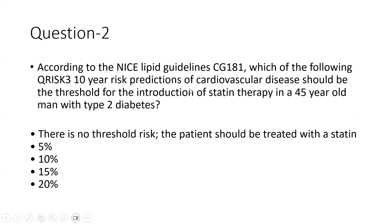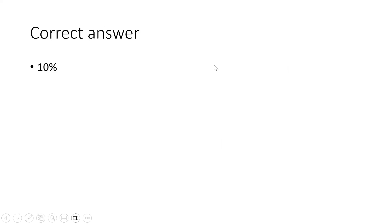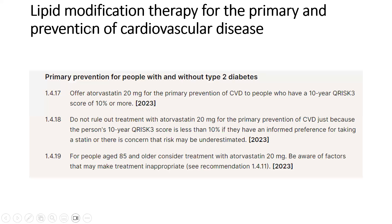Question two: according to NICE lipid guidelines, which QRISK3 10-year CVD risk threshold should be used for initiating statin therapy in a 45-year-old type 2 diabetic patient? Options: no threshold — treat directly; 5%; 10%; 15%; or 20%? The correct answer is 10%. The guidelines state that atorvastatin 20mg should be offered for primary prevention of CVD to people with a 10-year QRISK3 score of 10% or more in type 2 diabetic patients aged 25–84.